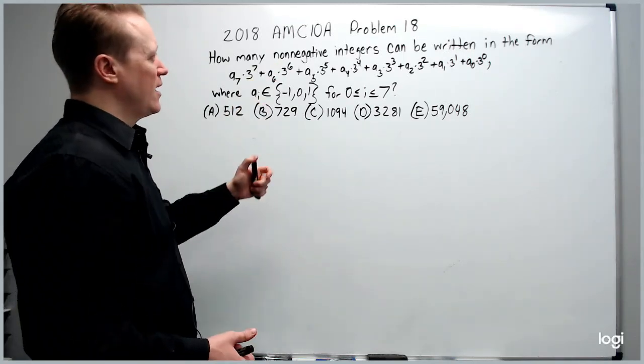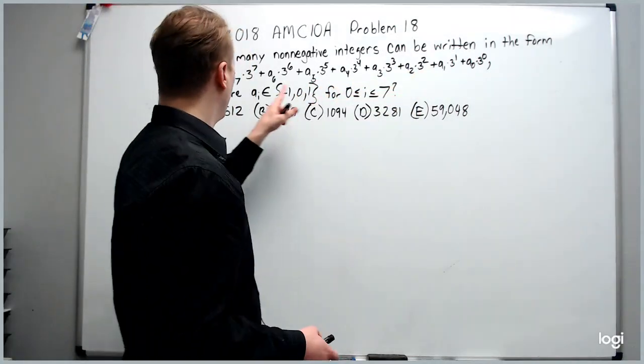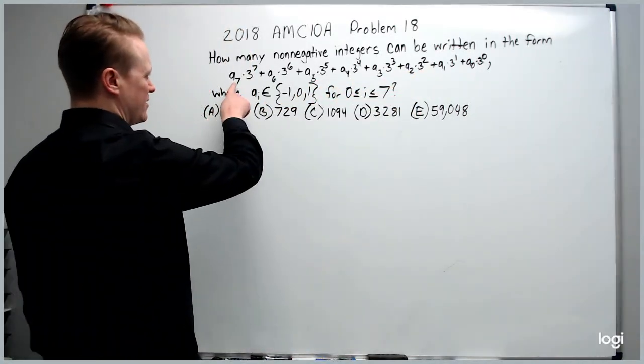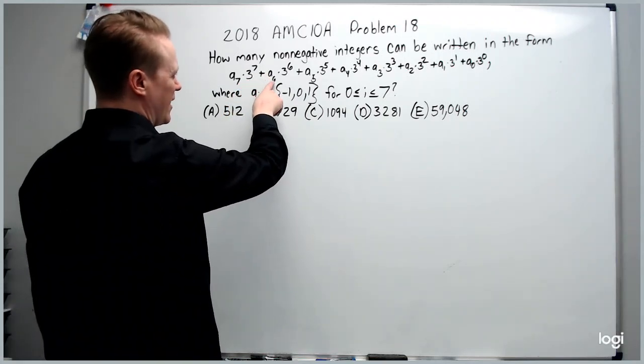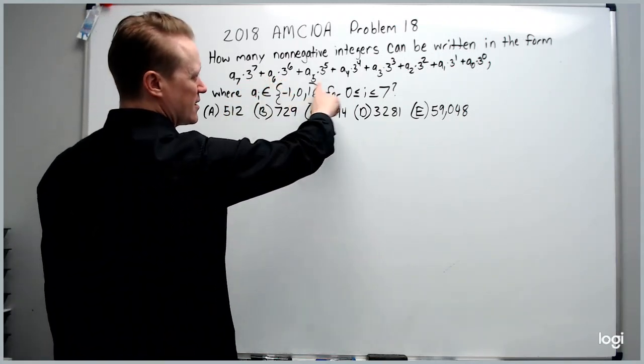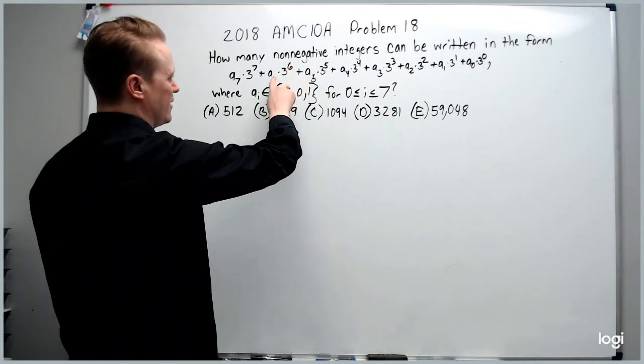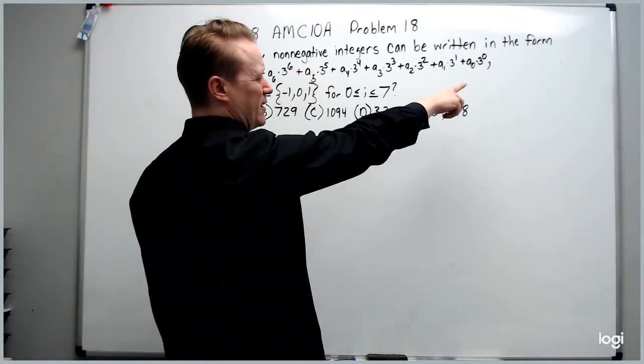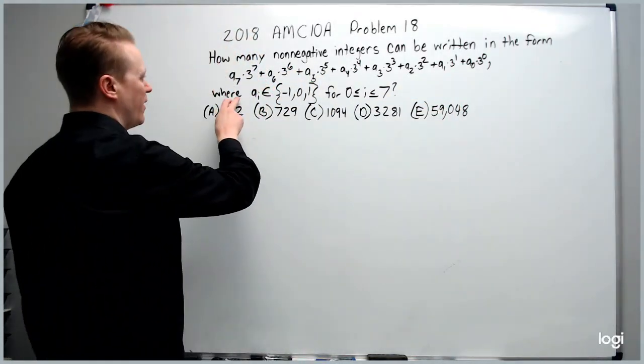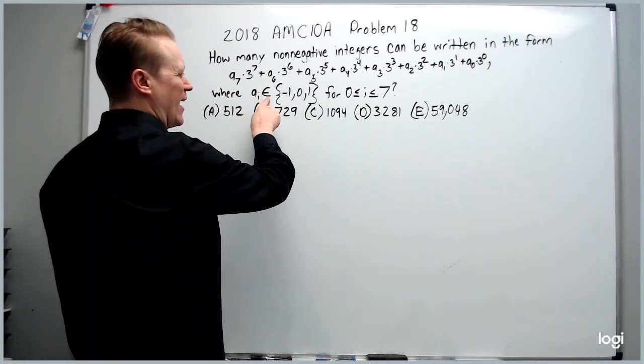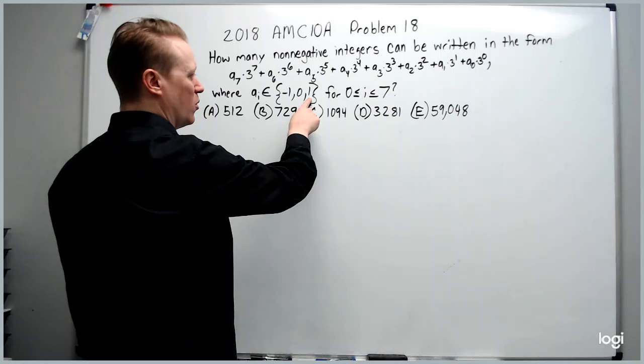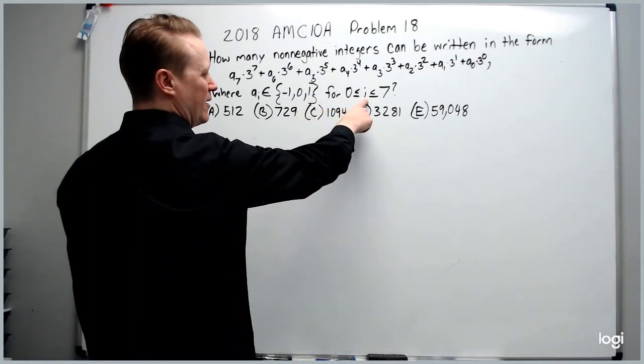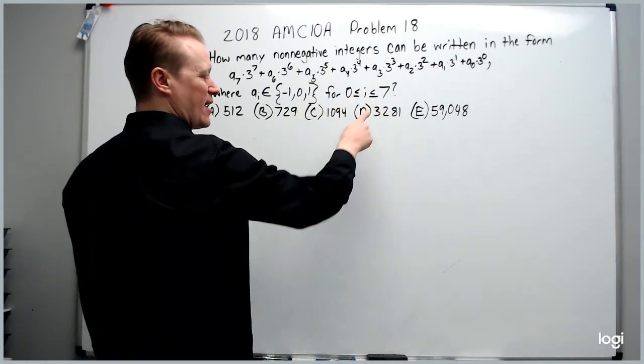It can be written in the form a sub 7 times 3 to the 7th plus a sub 6 times 3 to the 6th, all the way down where the subscript matches the exponent on 3, where a sub i is an element of the set negative 1, 0, or 1, for i between 0 and 7 inclusive.